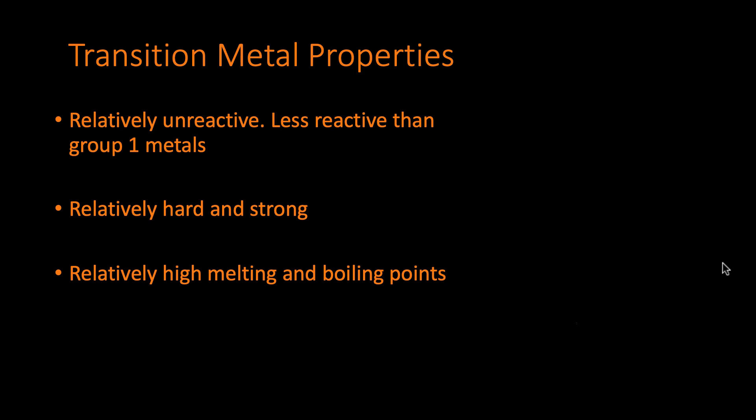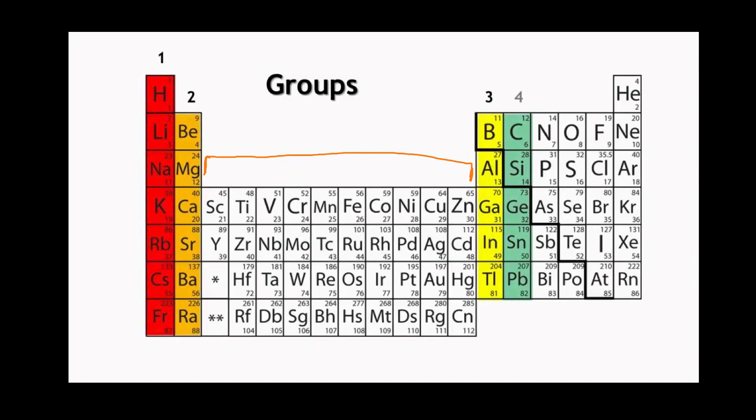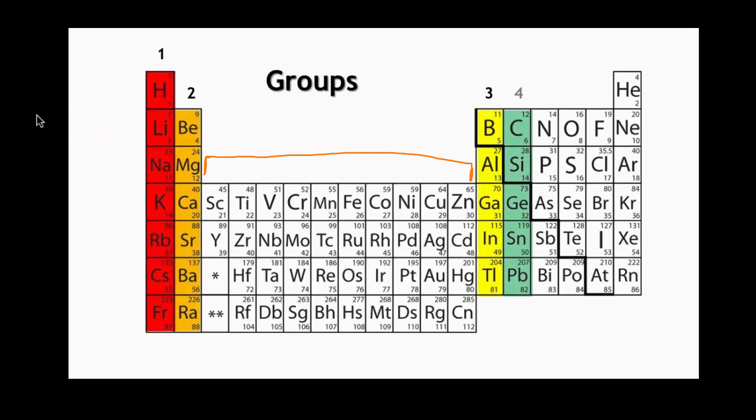They typically have high melting points and high boiling points. Now let me just go back to the periodic table and I'll just highlight a few. If we have a look at for example, let me just make sure this is going to work. There we go. Okay, so copper for example.